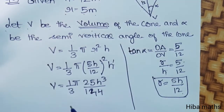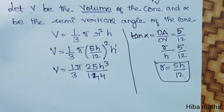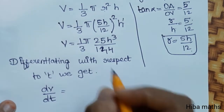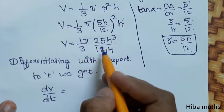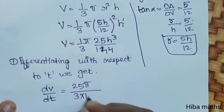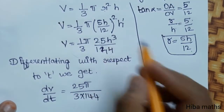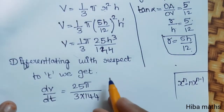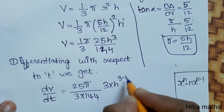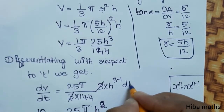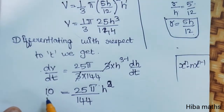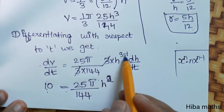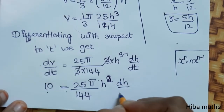Substituting R = 5H/12, we get V = (1/3)π(5H/12)²H. Now we differentiate with respect to T. dV/dt equals (25π)/(3 × 144) times 3H² times dH/dT. The 3s cancel, giving (25π/144) × H² × dH/dT.